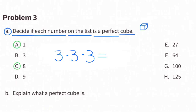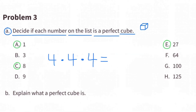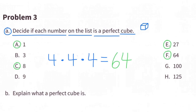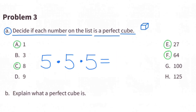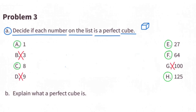3 times 3 times 3 equals 27, so 27 is a perfect cube. 4 times 4 times 4 equals 64, so 64 is also a perfect cube. 5 times 5 times 5 equals 125, so 125 is also a perfect cube. 3, 9, and 100 are not perfect cubes, because there is no whole number that multiplied by itself three times equals 3, 9, or 100.